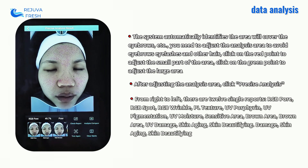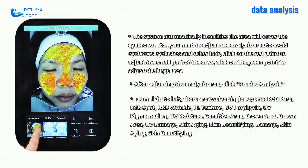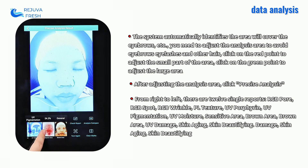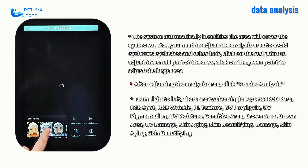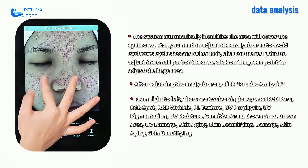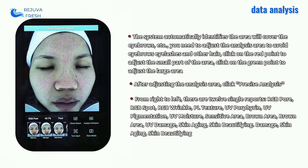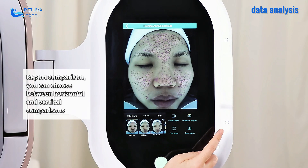From right to left, there are 12 single reports: RGB Pore, RGB Spot, RGB Wrinkle, PL Texture, UV Porphyrin, UV Pigmentation, UV Moisture, Sensitive Area, and Brown Area.